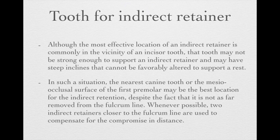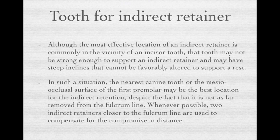However, when using this principle to locate the ideal indirect retainer, you often find that an incisor tooth is at that location. Considering the incisor tooth size, it's not strong enough to support an indirect retainer. Also, some incisor teeth have a very steep incline, which is not a favorable location to support a rest. In this situation, you would likely choose the nearest canine or the mesio-occlusal surface of the first premolar as the indirect retainer location.